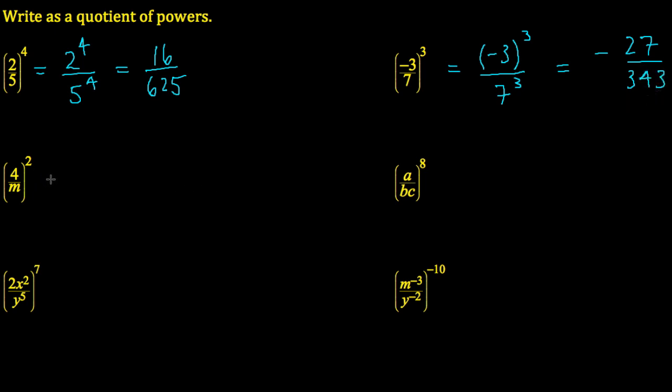Now we try some questions that have some variables in them. The process is no different. This is 4 to the exponent 2 over m to the exponent 2. Again, I can evaluate the 4, so that is 16 divided by m squared.